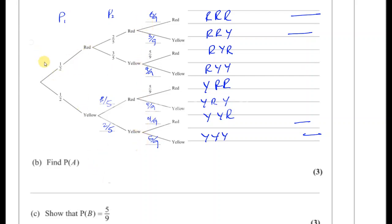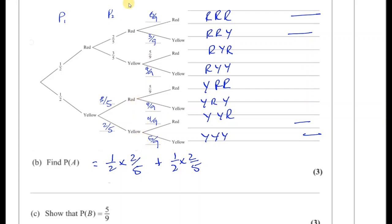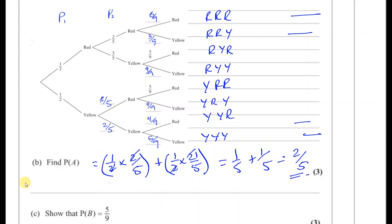The probability of A is going to be: a half times 2 fifths for two reds, plus a half times 2 fifths for two yellows. That gives us 1 fifth plus 1 fifth, which equals 2 fifths. So the probability of A is 2 fifths.